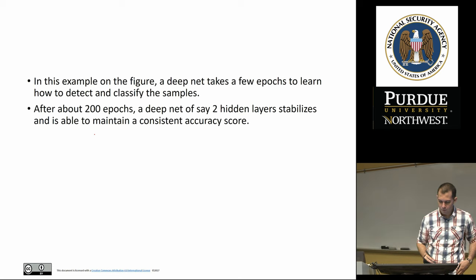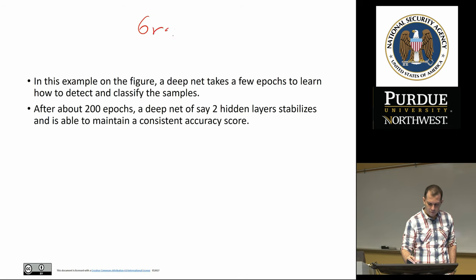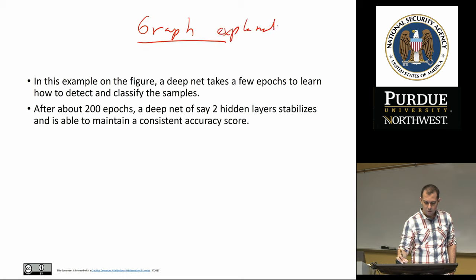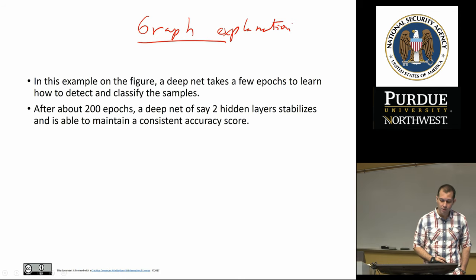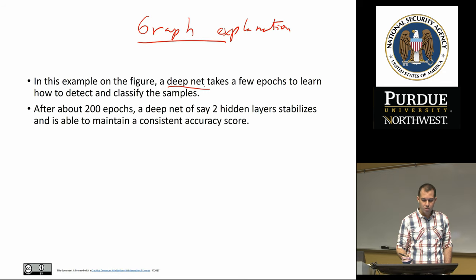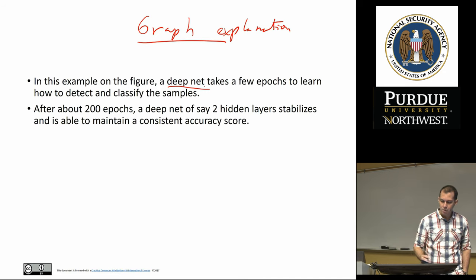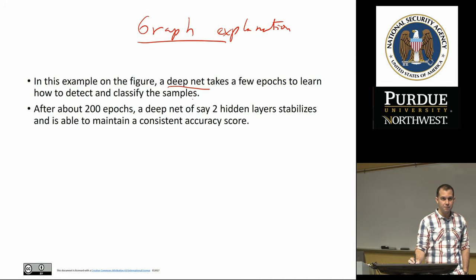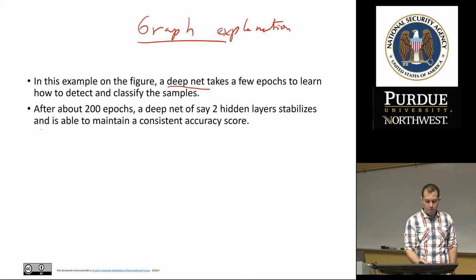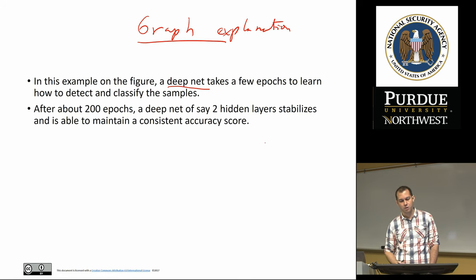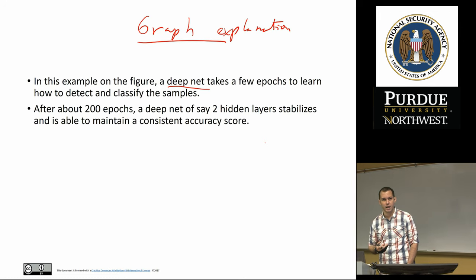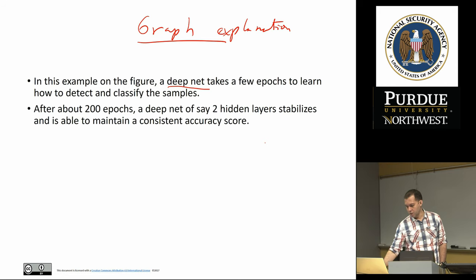There is an optimal space, and there's no science to this — it's usually more of an art. You have to play with the data, get a feel for it, and then play with the parameters: number of epochs, batch size, and learning rate, until you find an optimal solution. In the example on the figure, a deep net of two hidden layers, after about two hundred epochs, stabilizes and is able to maintain a consistent accuracy score. That's really what you're looking for when you're building a neural network.